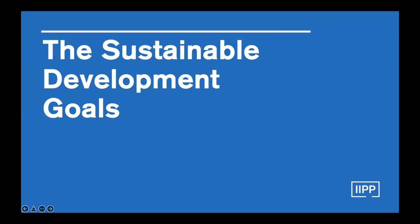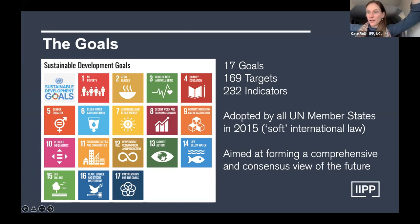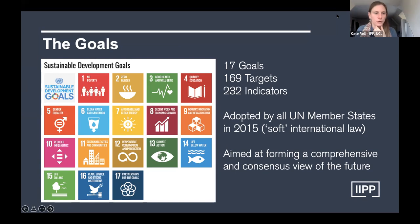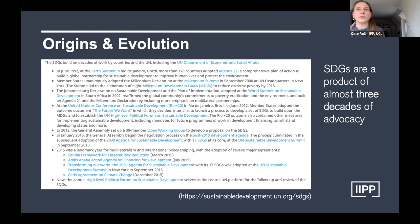The Sustainable Development Goals — this is the image most people are familiar with. We've got 17 goals, and when we zoom out, 169 targets and over 230 indicators. These were adopted by UN member states in 2015, also sometimes called the 2030 Agenda because they're supposed to be achieved by 2030. It's aimed at forming a comprehensive and consensus view of the future. This agenda was adopted in 2015 but was first conceptualized in 1992 with the Rio Earth Summit.